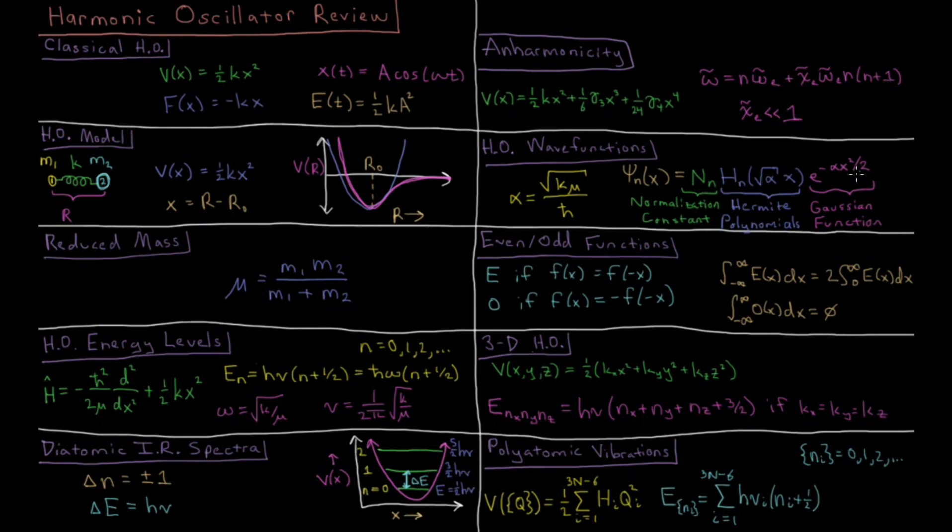The last part of it is a Gaussian function, e to the minus alpha x squared over two, just the standard bell curve type function. Our alpha here, which appears in the polynomials and the Gaussian, is determined by the square root of our spring constant times reduced mass divided by h bar Planck's constant.